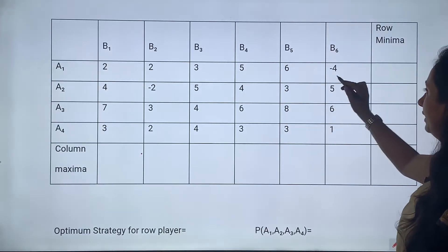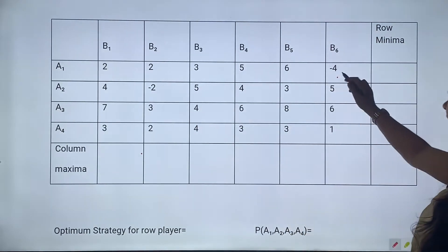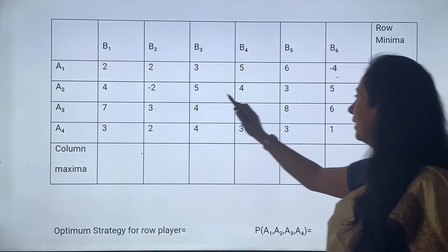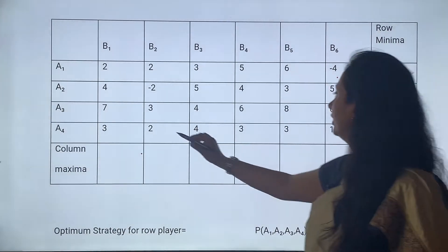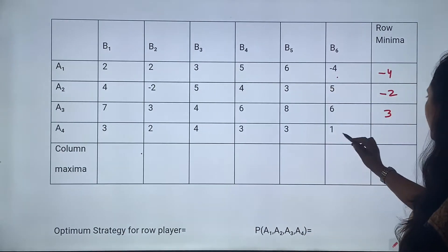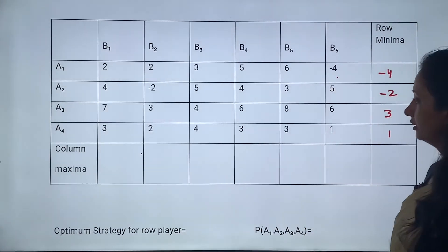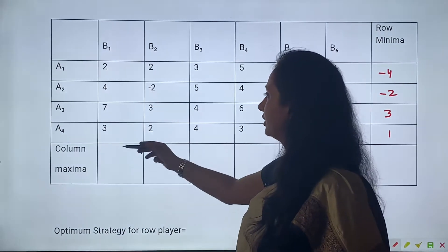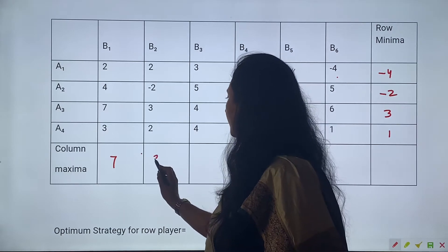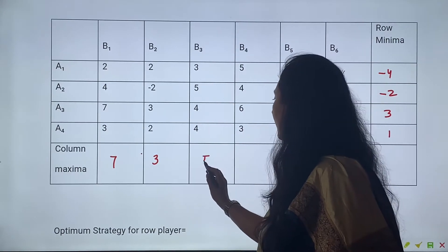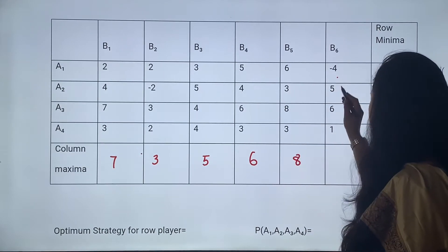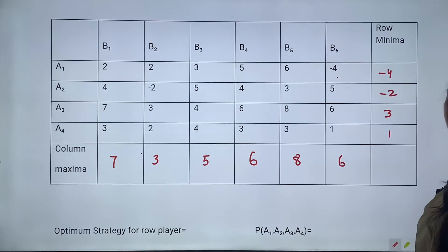First row में A1 strategy की minimum value है minus 4. Next row में minimum value है minus 2. इसमें minimum value है 3. इस row में minimum value है 1. Now the column maxima: इसमें maximum value है 7, इसमें 3, इसमें 5, इसमें 6, next 8, next is 6.